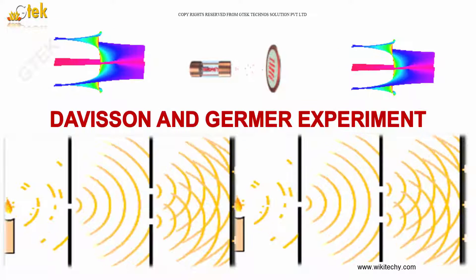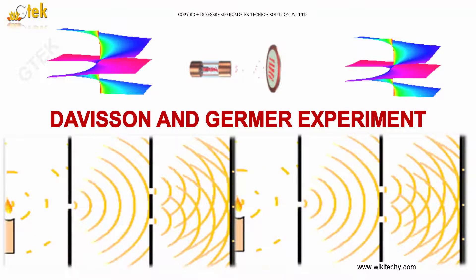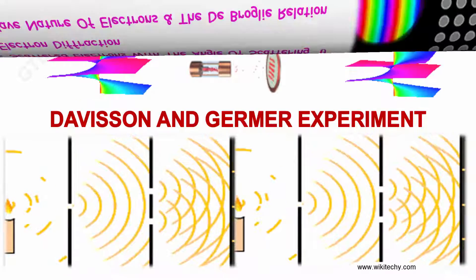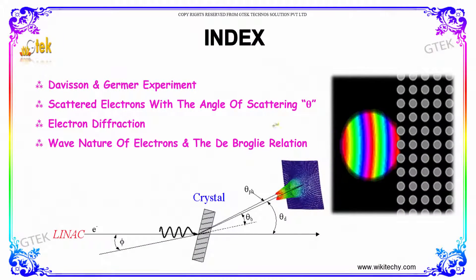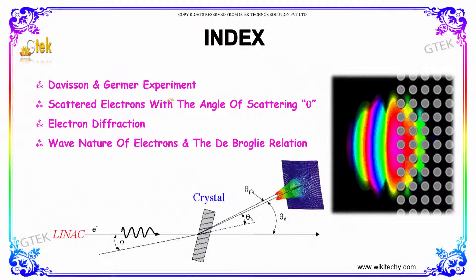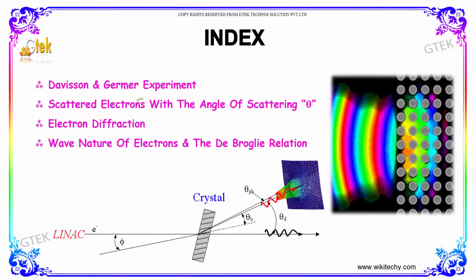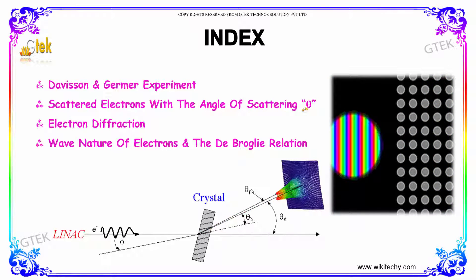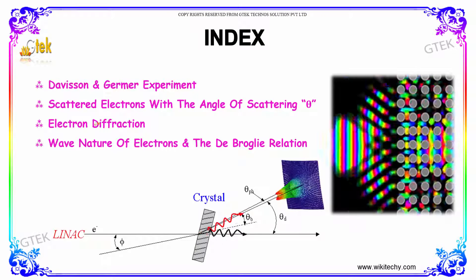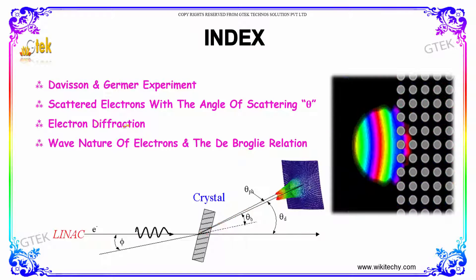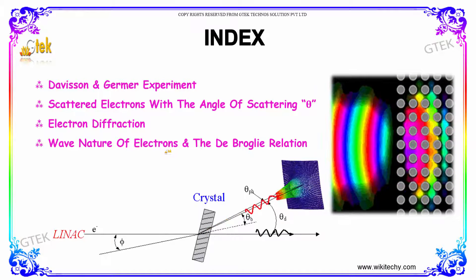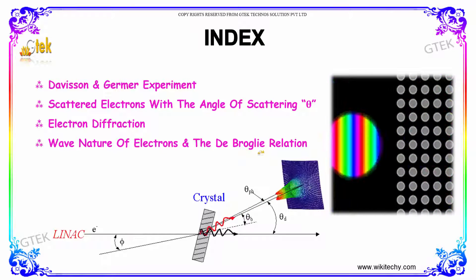We are now in the interesting area of the Davison-Germer experiment. Here is the index of the Davison-Germer experiment with the scattered electrons with the angle of scattering theta. We are going to talk about electron diffraction, followed by the wave nature of electrons and the de Broglie relation.